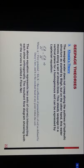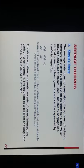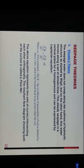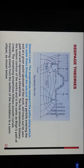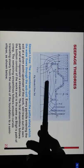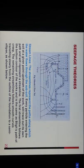The above equation represents two sets of curves intersecting each other orthogonally. The resultant flow diagram showing both curves is called a flow net. This is the actual Khosla flow net. The dotted lines show equipotential lines, and the continuous lines show streamlines.